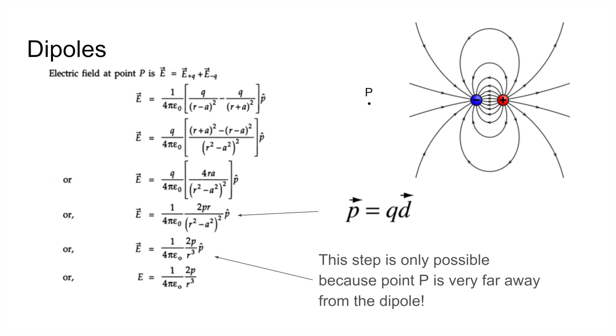The dipole moment equals the magnitude of the charge times the distance between the two charges. The dipole moment is given by a vector pointing towards the positive charge.